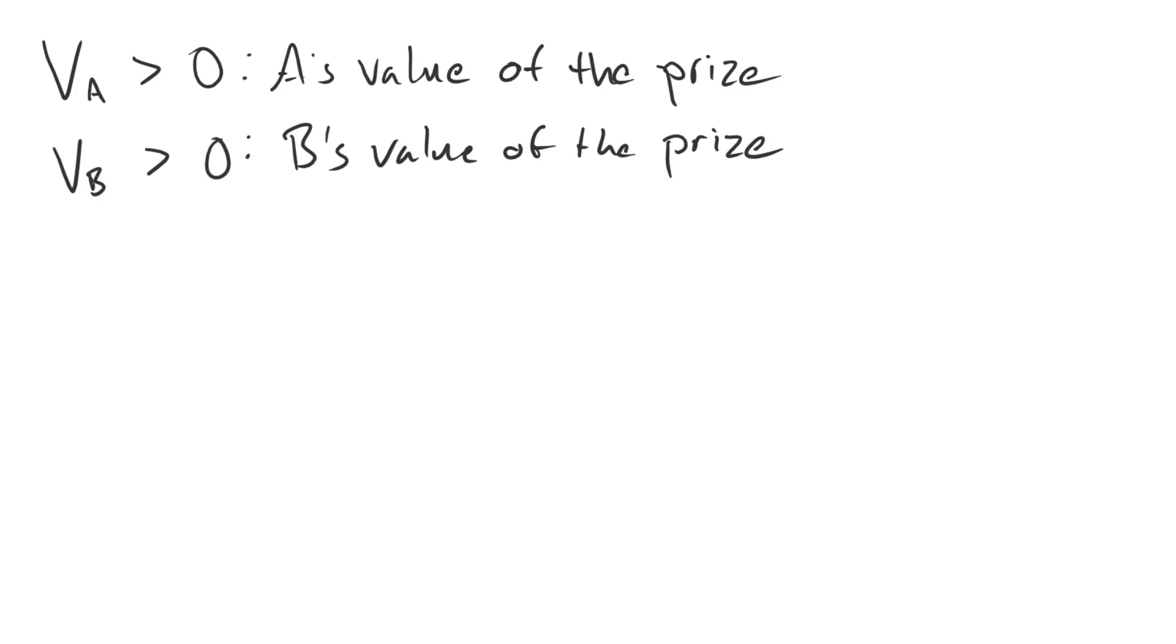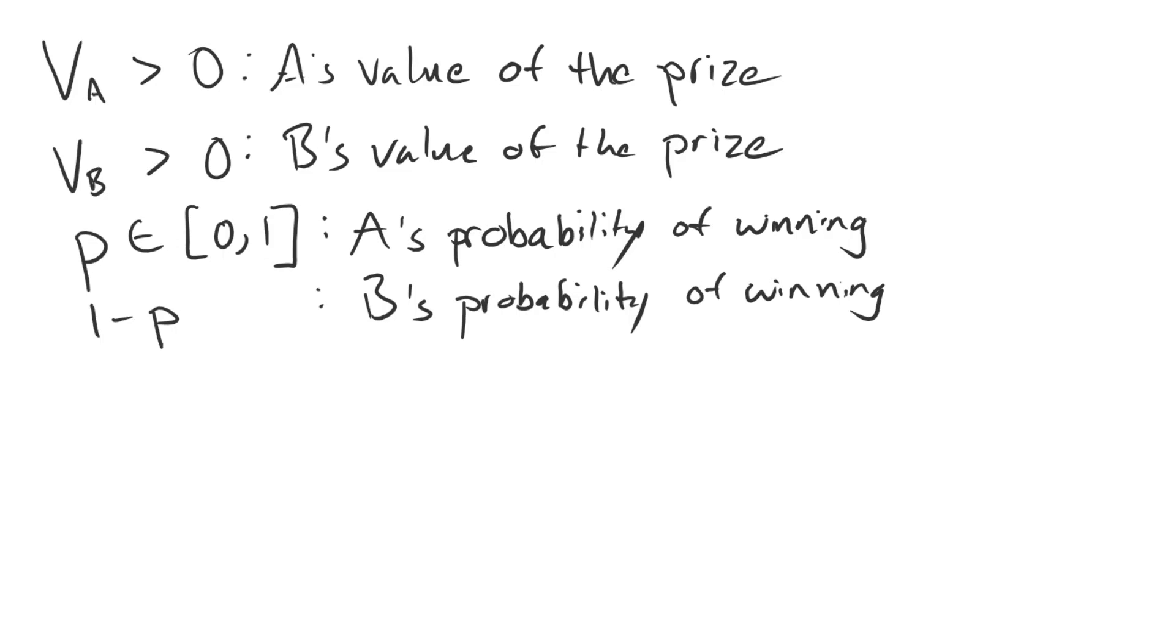The party that wins will capture the entire prize and the party that loses will capture nothing. We're going to let P, some value between 0 and 1, represent A's probability of winning a war. Now because P is a probability between 0 and 1, 1 minus P represents B's probability of winning. The two probabilities must sum to 1 if we're going to have no draws.